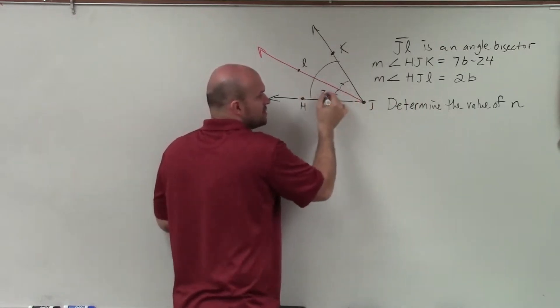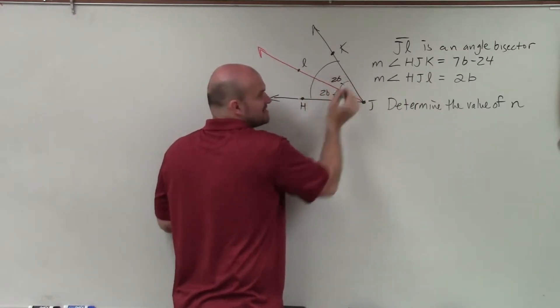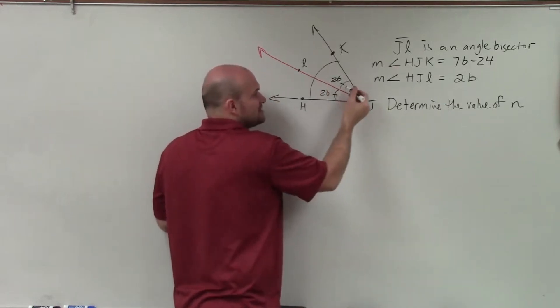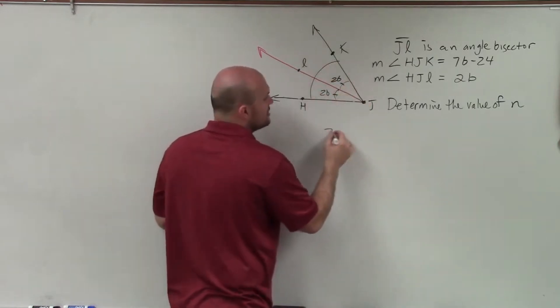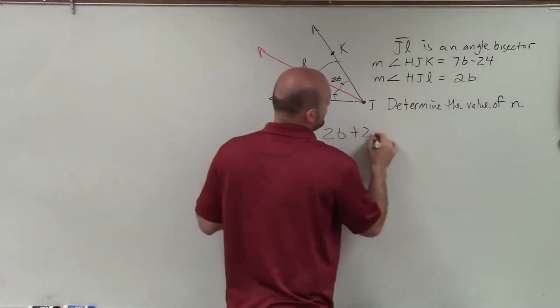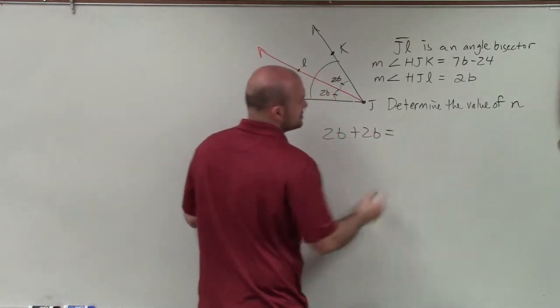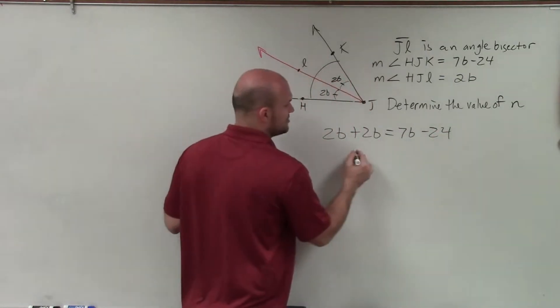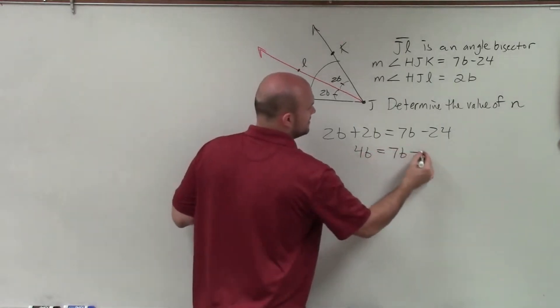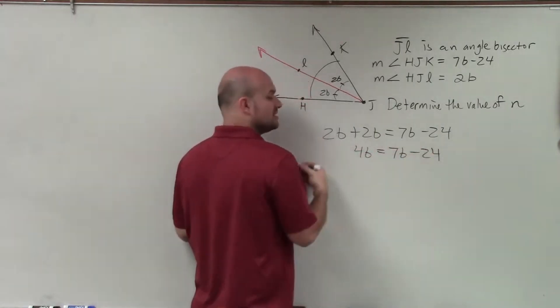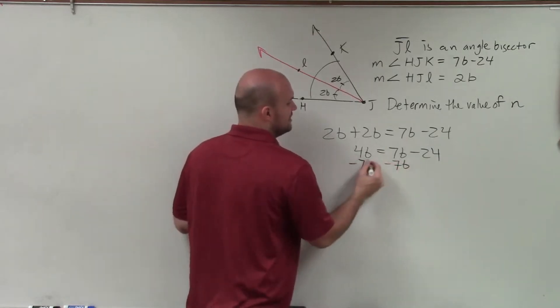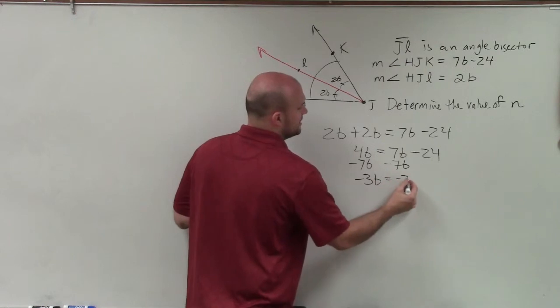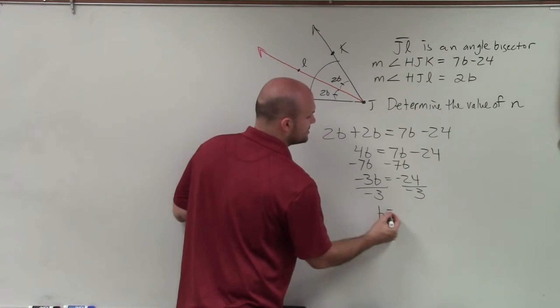Now remember, we said that these are equivalent. So if that's 2B, then that has to be 2B. And understanding that this plus this has to equal the measure of the large angle, right? This plus this is equal to the measure of the angle. So I need to solve for B so I can write 2B plus 2B is equal to 7B minus 24. So now I can combine my like terms on my left side. So I have 4B equals 7B minus 24. Now I'll get the variables to the same side. So I'll subtract 7B on both sides. And I'm left with negative 3B equals negative 24. Then divide out a negative 3, and my final answer is B equals 8.